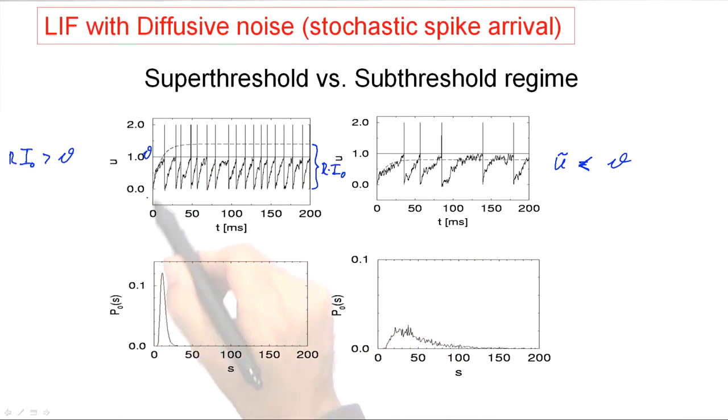But because there's a threshold, of course, I have a spike, I reset, I have another spike, I reset. So in this case, the threshold would be reached even in the absence of the fluctuating contribution to the current. And for this superthreshold regime, the interval distribution is sharply peaked. And if the noise level is low, then the peak would sit exactly at the interspike interval T, which you would find for noise-free stimulation.